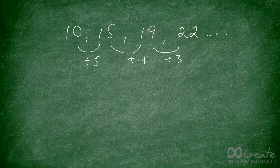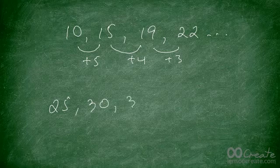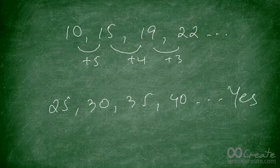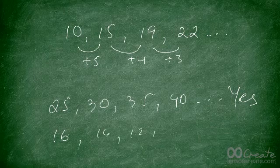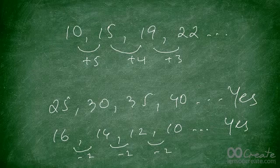We'll only discuss series in which the difference remains the same. Is the series 25, 30, 35, 40 an arithmetic progression? Yes, it is. What about 16, 14, 12, 10? Yes — it's a declining series, but the difference is the same: minus 2. The difference can be positive or negative; it just has to remain the same throughout.